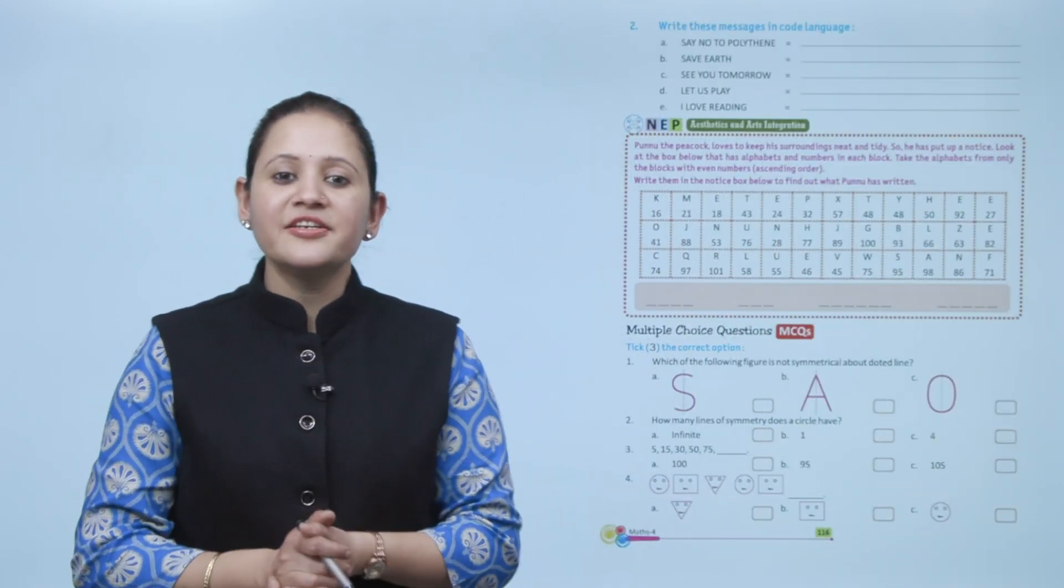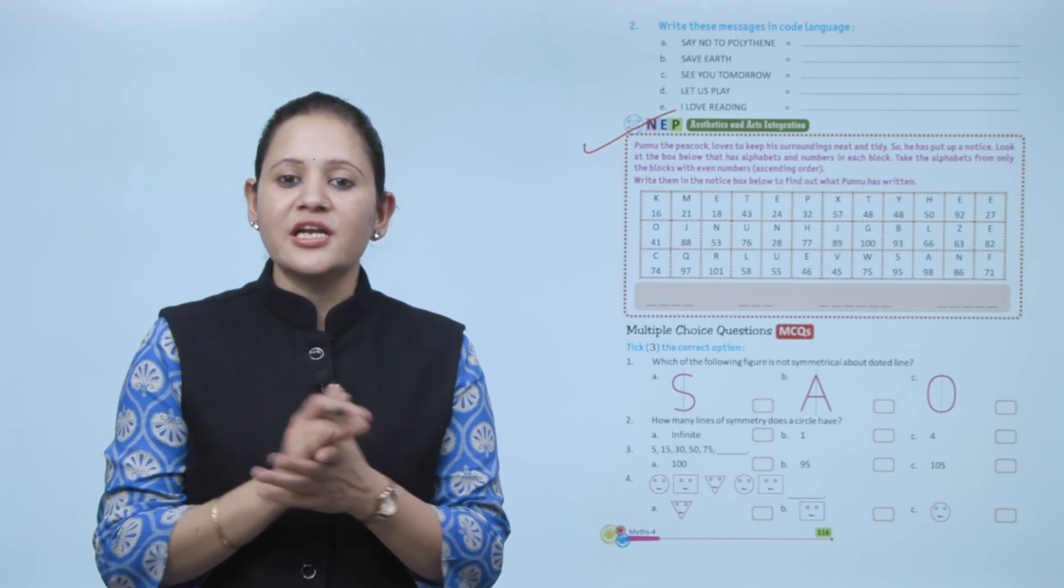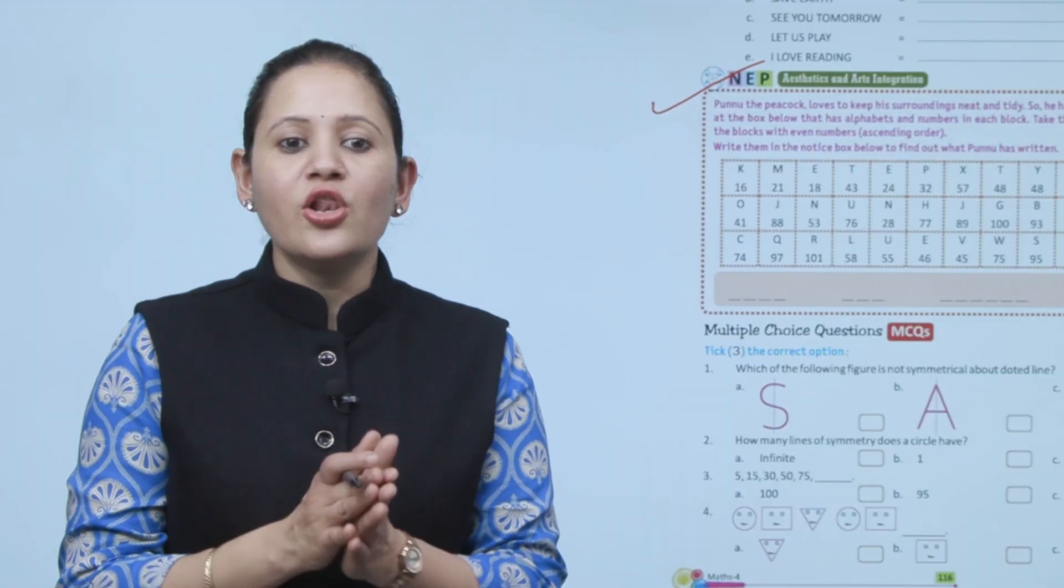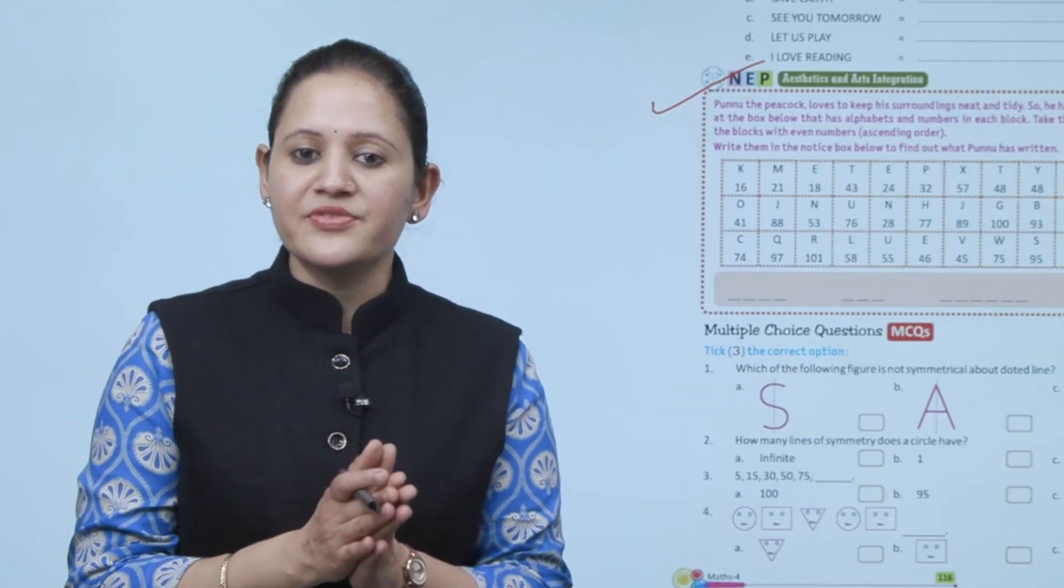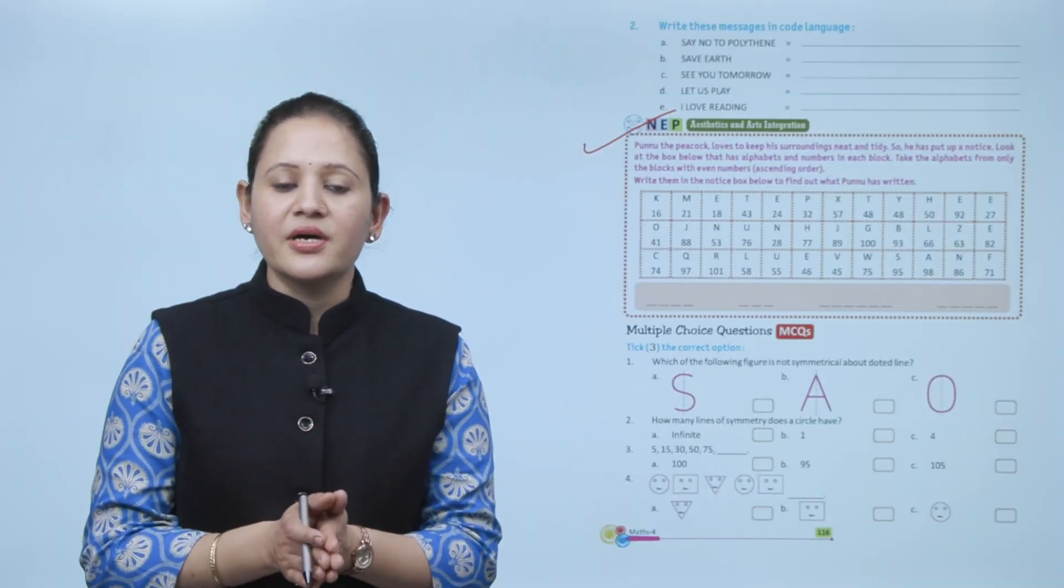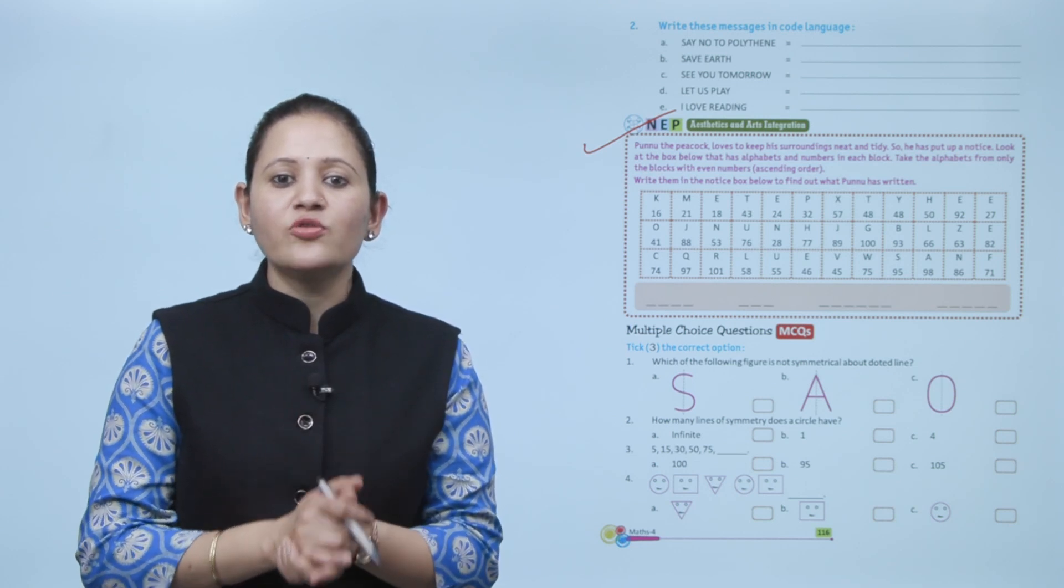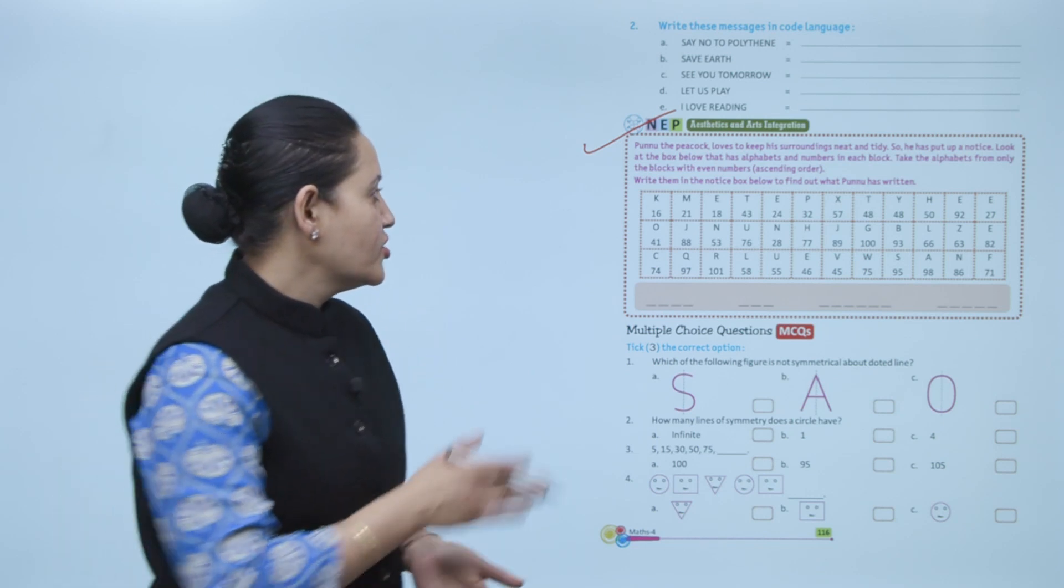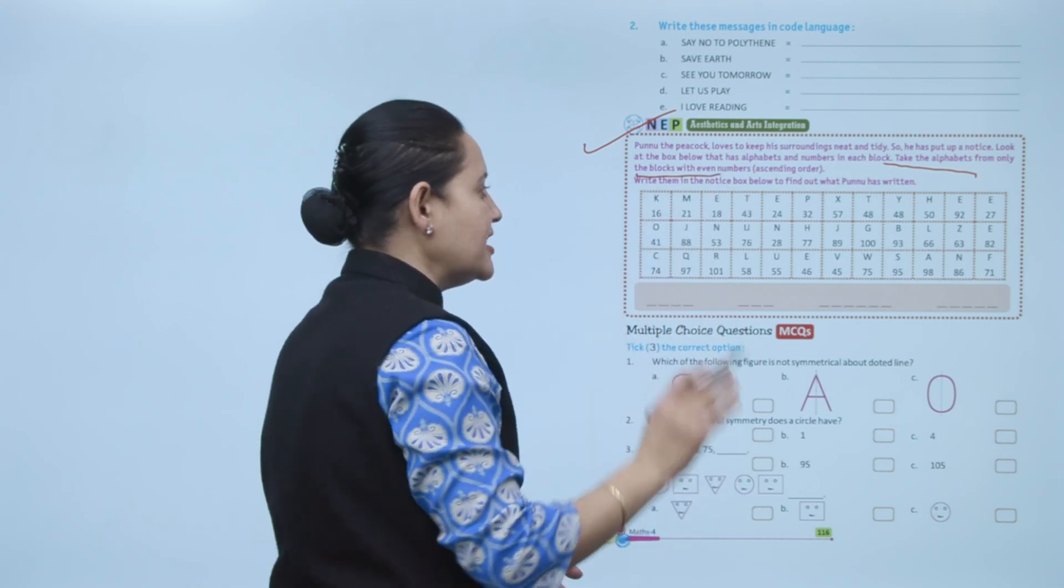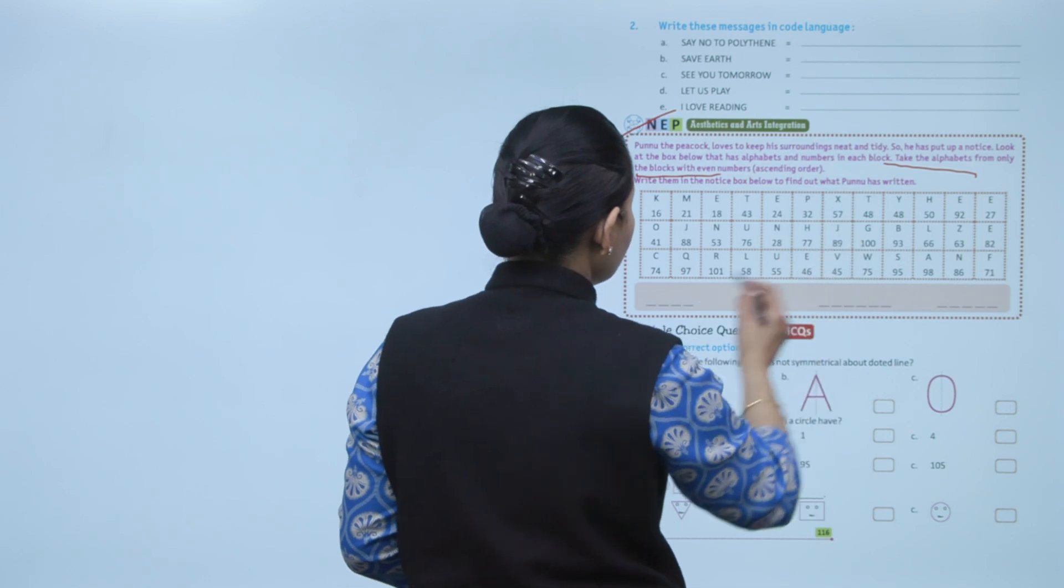Next is Aesthetic and Art Integration. Pundu the peacock loves to keep the surroundings neat and tidy, so he has put up a notice. Look at the box below that has alphabet and number in each block. Take the alphabet from only the blocks with even numbers in ascending order, write them in the notice box below, and find out what Pundu has written. So we will take the alphabet from only the blocks with even numbers in ascending order. Which one is the smallest?